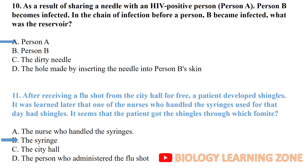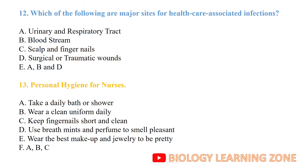Which of the following are major sites for healthcare-associated infections? Healthcare-associated infections can occur at the urinary and respiratory sites, the bloodstream, and surgical or traumatic wounds.